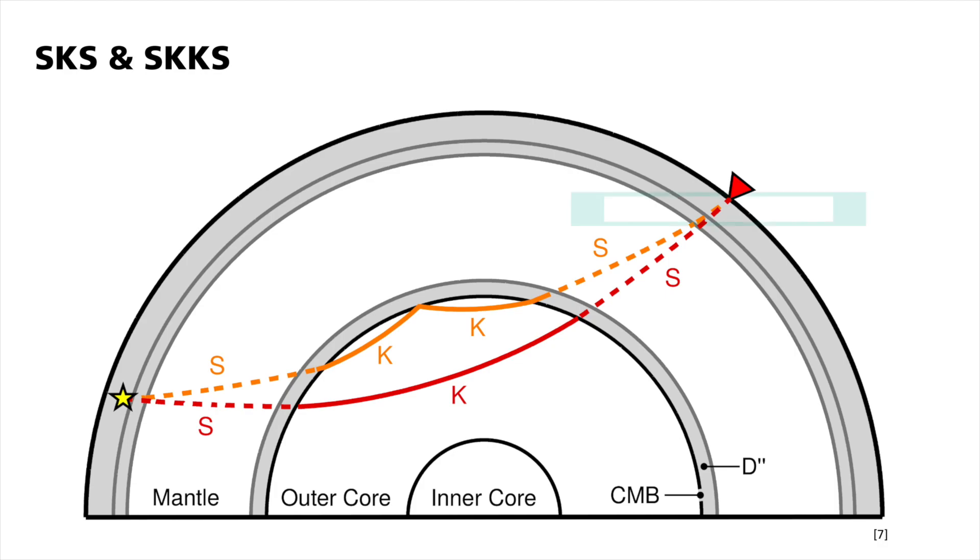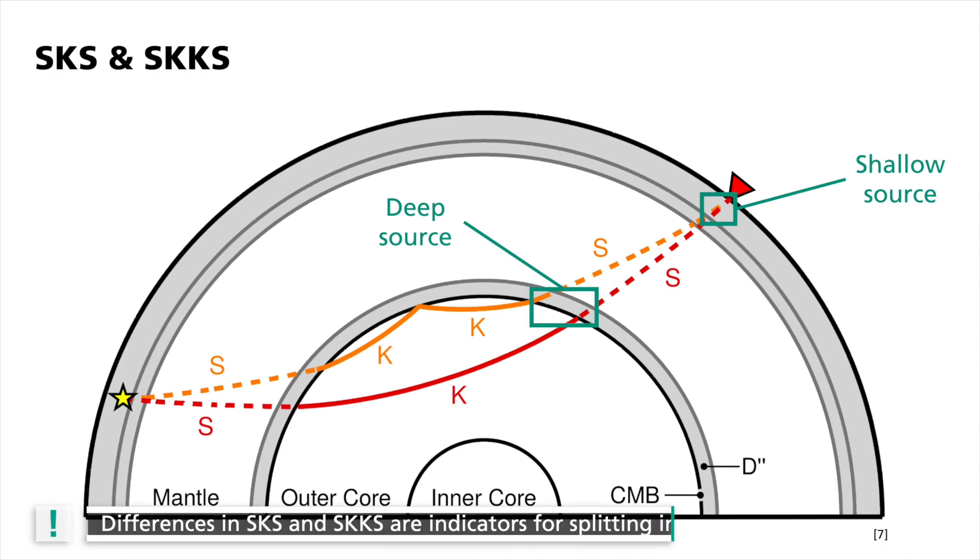The most important aspect of the SKS and SKKS phases is that they have very similar ray path in volumes directly beneath the station. In contrast, the ray path in the lowermost mantle in D double prime differ significantly. For a shallow source, we would assume that the splitting results for the SKS and SKKS phases are nearly identical. However, for the lowermost mantle and the D double prime, SKS and SKKS lie thousands of kilometers apart from each other. Additionally, other experiments suggest that the overlying mantle is nearly isotropic. Therefore, the differences between SKS and SKKS are strong indicators that the anisotropic source responsible for the splitting is located in the D double prime.